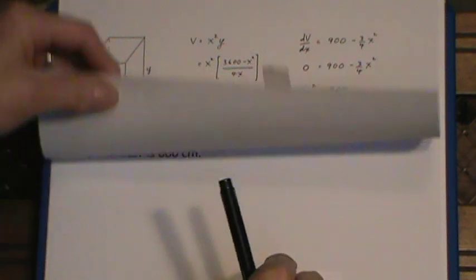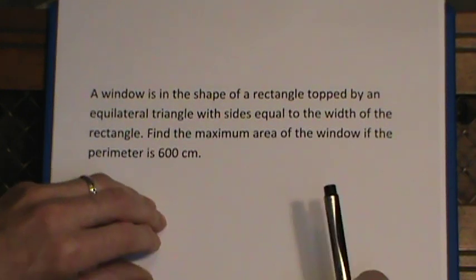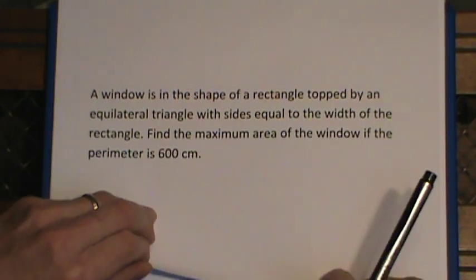The second problem that I'm going to look at, again a fairly standard question where you have a window, rectangle, top line, and equilateral triangle. And again we want to find the maximum area and we're given the perimeter, the fixed perimeter for this.